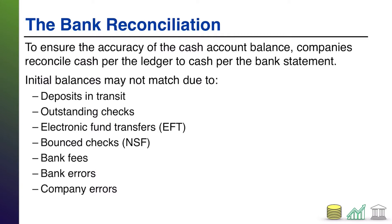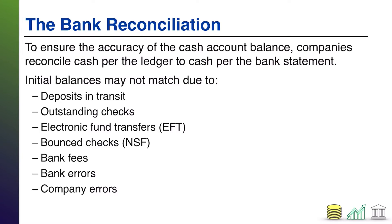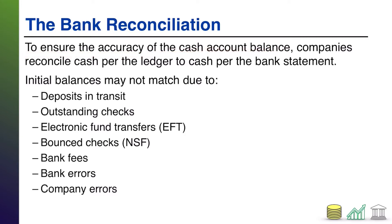Basically, the bank reconciliation is where you take your cash ledger that's maintained within the company — so basically all the transactions that affected cash — and you compare them to the bank statement for your bank account that holds cash. That bank statement shows you cash in and out per the bank. You have a ledger that shows cash in and out per the company. You compare the two in order to come to what is an accurate cash balance that you need to be reporting on your financial statements.